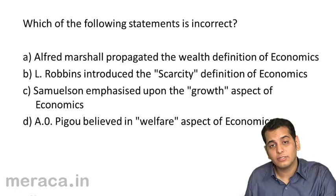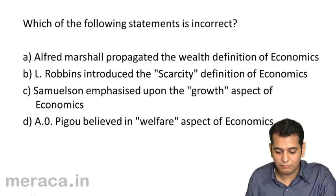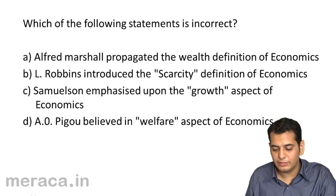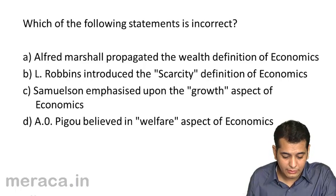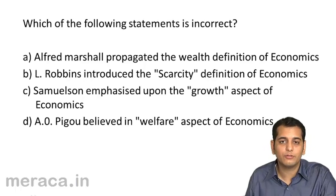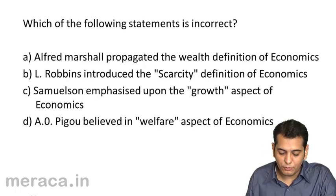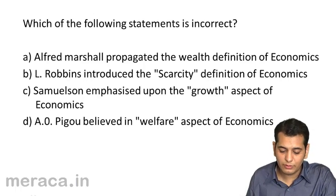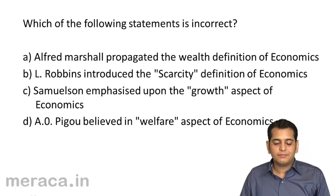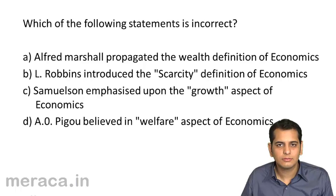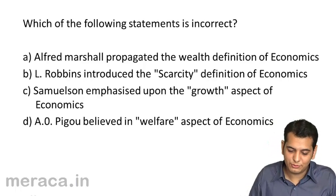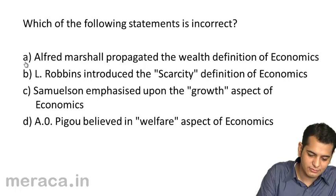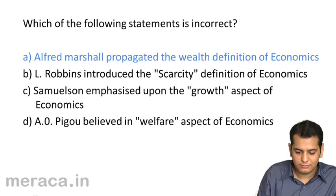Which of the following statements is incorrect? A. Alfred Marshall propagated the wealth definition of economics. B. Lionel Robbins introduced the scarcity definition of economics. C. Samuelson emphasized upon the growth aspect of economics. D. Pigou believed in the welfare aspect of economics. Alfred Marshall gave which definition? He gave the welfare definition. So the first line — that Alfred Marshall propagated the wealth definition — is incorrect.